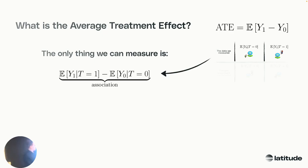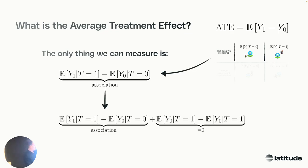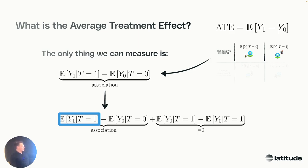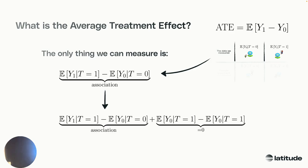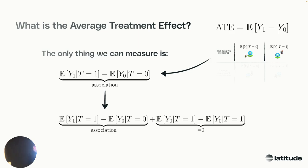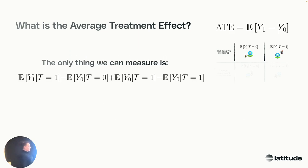The only thing we can measure is for the group that got the treatment — what happened to them — and the other way around. What we're measuring is basically your correlation, and that's the only thing we have. This part is a bit weird — we add zero to it. We just add and subtract the exact same amount and then we can rewrite some stuff. So: math magic. We've got our association: the treated group with the output of being treated, and the not-treated group with the output of not being treated. We add some weird stuff where we say 'this is the treated group if they would not have gotten treatment' — and we add and subtract that. So we don't change the formula at all.